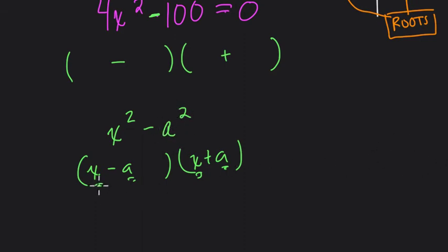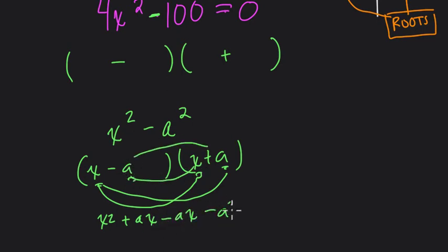You can test this out using some kind of multiplication technique, like FOIL or whatever you use. It's x² + ax - ax - a². Notice when we do this, these terms here cancel out, and what's left is x² - a².